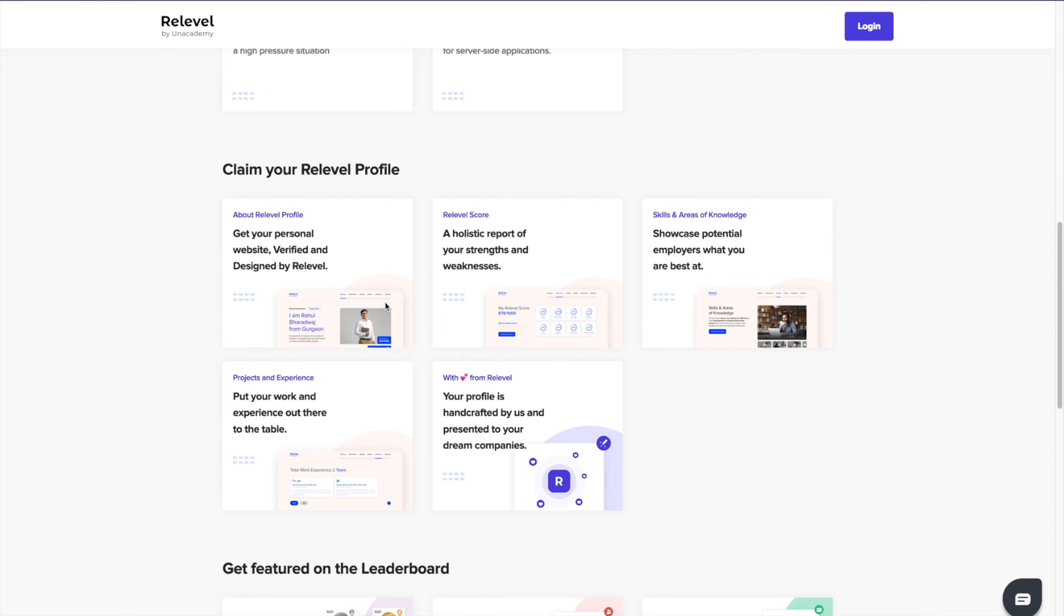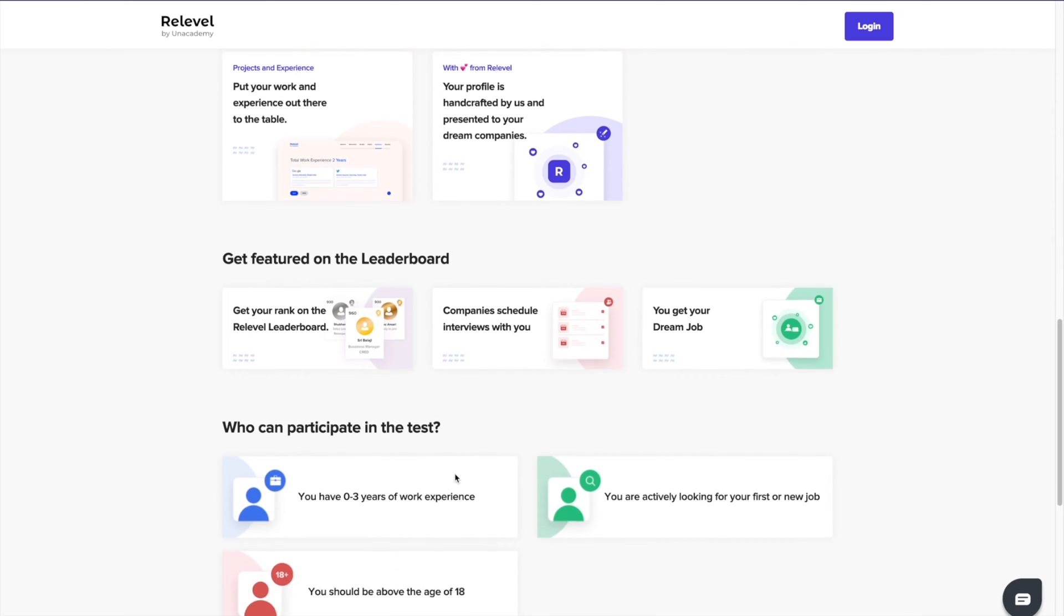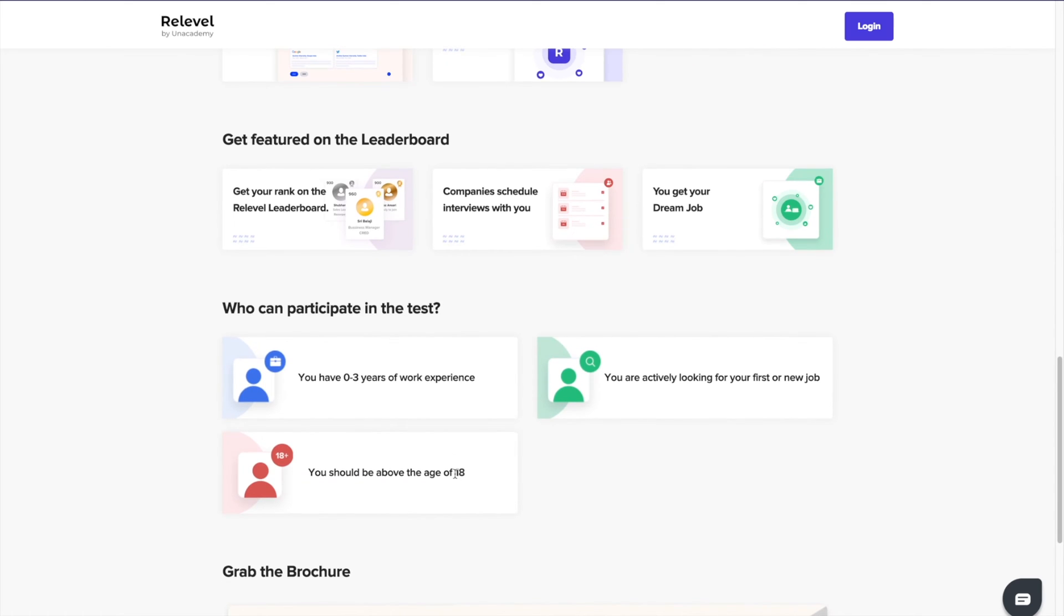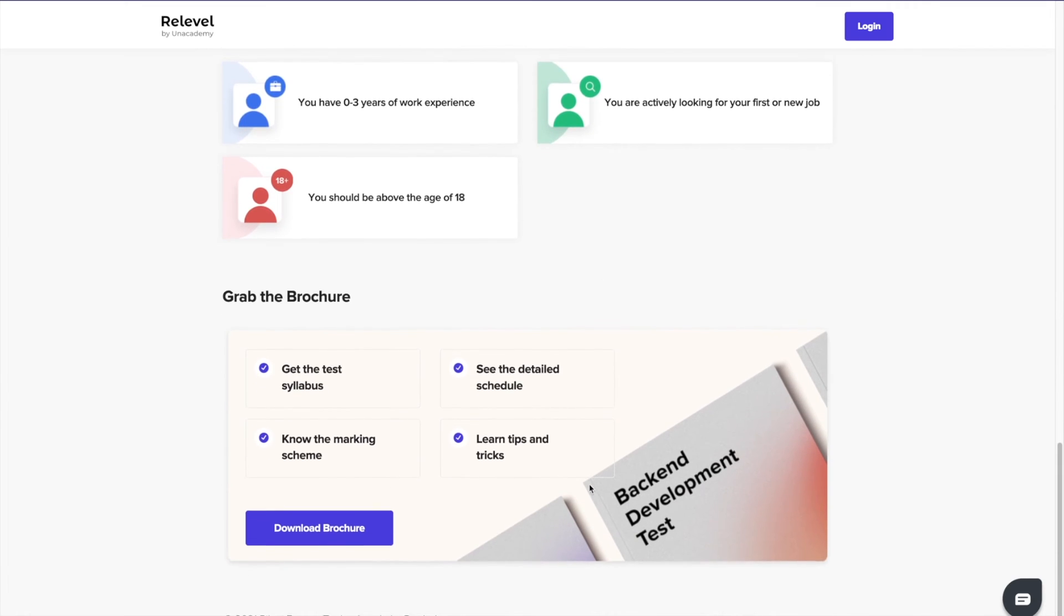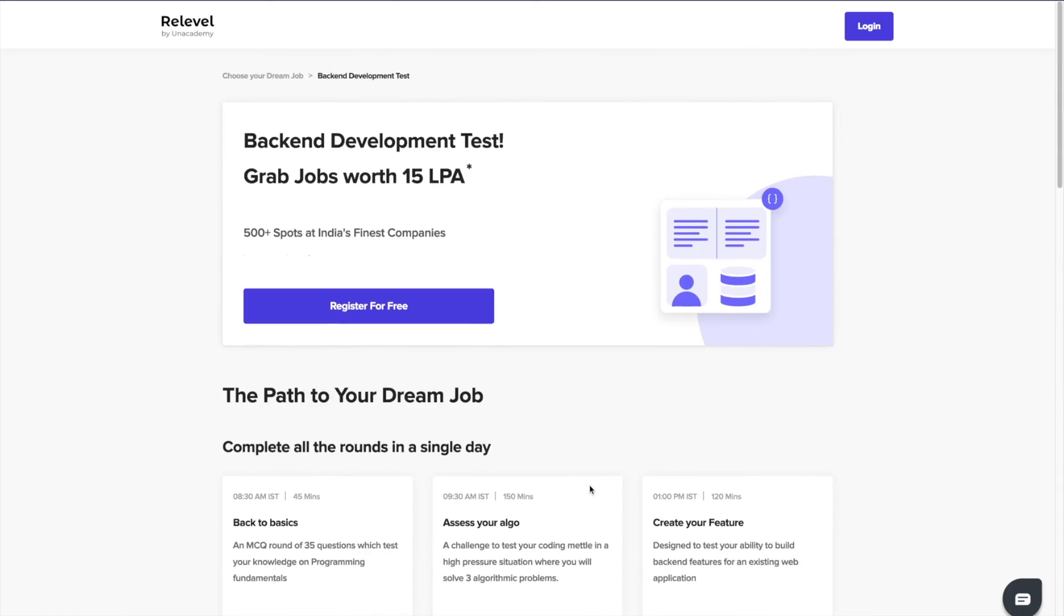Just register for the Relable test conducted by Relable by an academy and you'll get a chance to apply for front-end, back-end and business development roles at India's top startups and unicorn companies. Relable has 1000 plus openings, 550 plus companies and the best thing is, it's absolutely free. So please make sure you check out all the links in the description and give the Relable test as soon as possible.